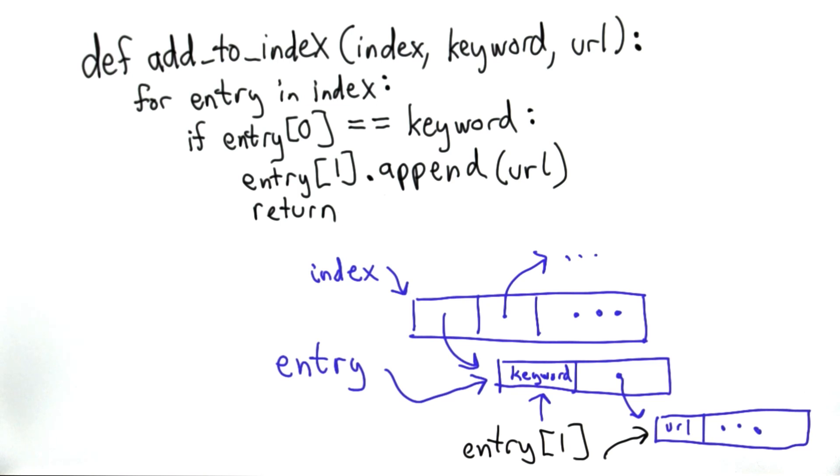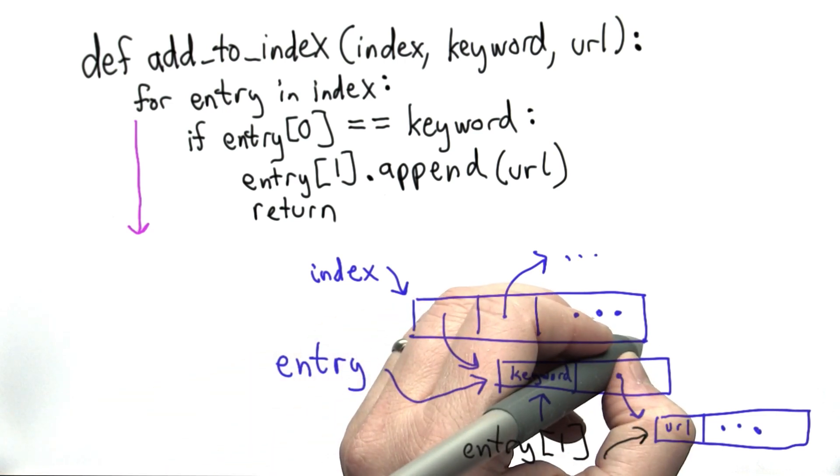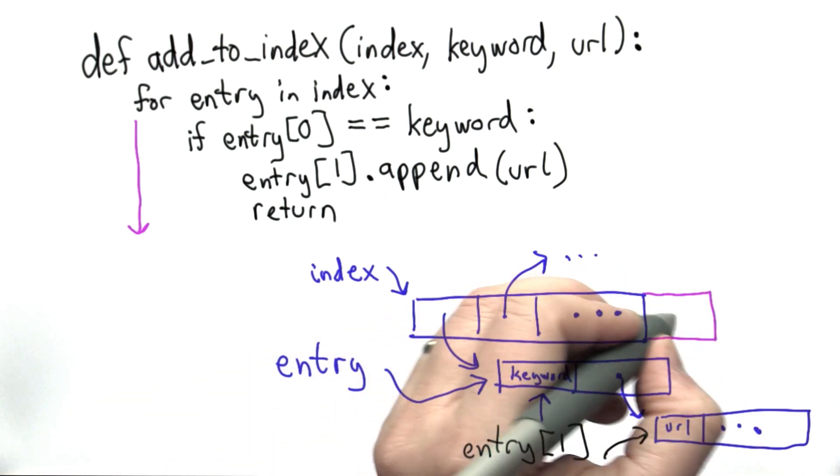Now we need to think about what to do in the case where the keyword does not already exist in the index. If that's the case, then we get to the end of the loop without ever finding that entry. So if we got to the end of the loop, that means we did not find any entry in the index that matches the keyword. Then what we want to do is add a new entry.